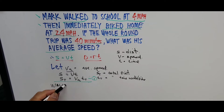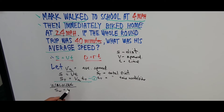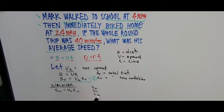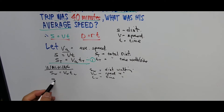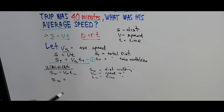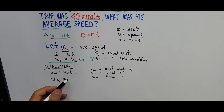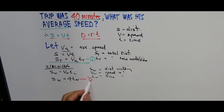Now let's consider walking. Distance walking S_W equals speed walking times time walking. Substituting the value: distance walking W equals 4 miles per hour times time of walking T_W. So S_W equals 4 times T_W. That is our second equation.